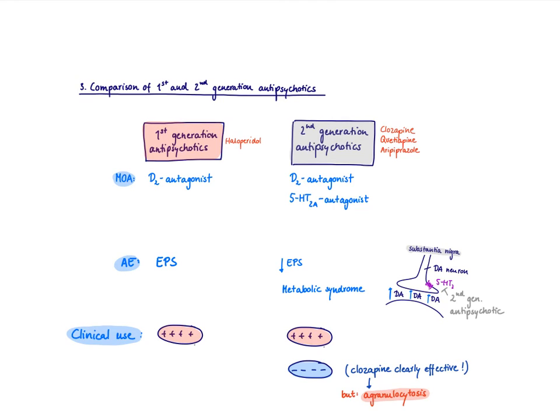The important point here is really that these 5-HT2A receptors presynaptically are mainly found in the substantia nigra. And that's the reason why you tickle these dopaminergic neurons a little bit and therefore have less of the EPS side effects.